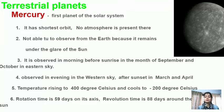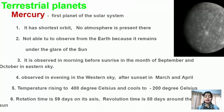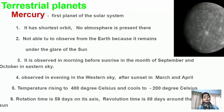Mercury is the first and smallest planet, and has the shortest orbit. It is difficult to observe from Earth because it gets hidden in the glare of the Sun. It is observable in the western sky after sunset in March and April, and before sunrise in September and October. Temperature ranges from 400°C down to minus 200°C. Rotation time is 59 days and revolution time is 88 days.